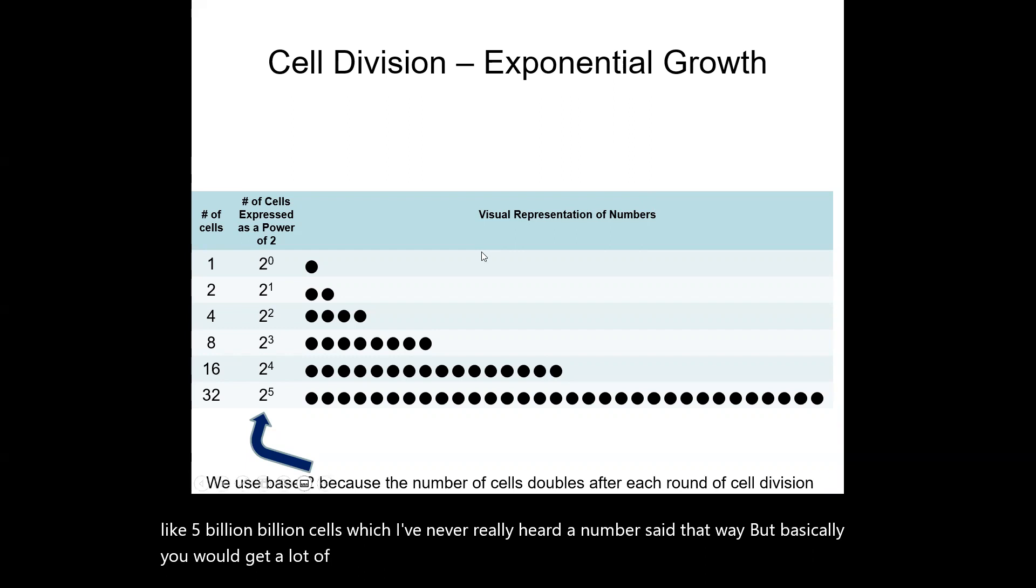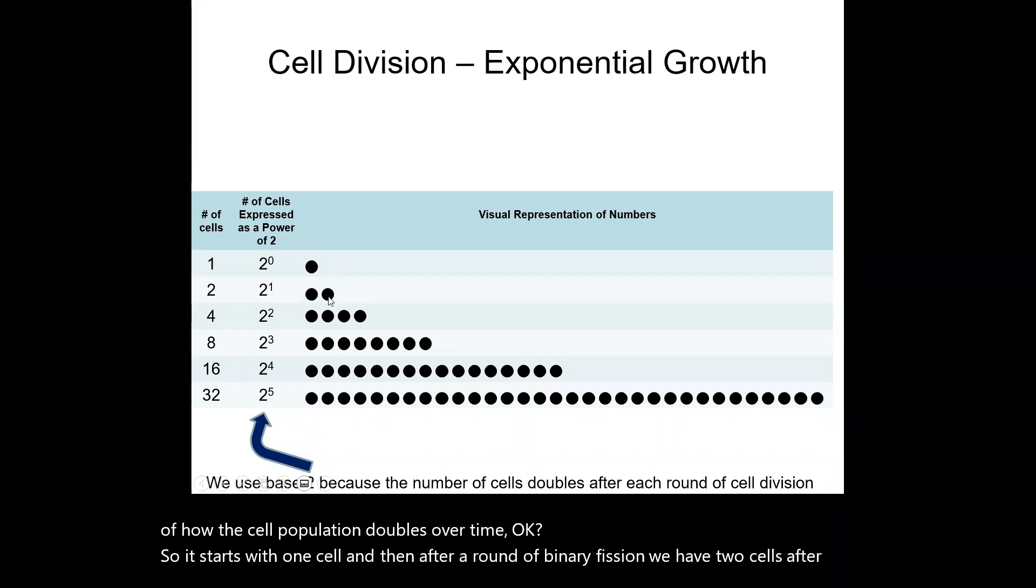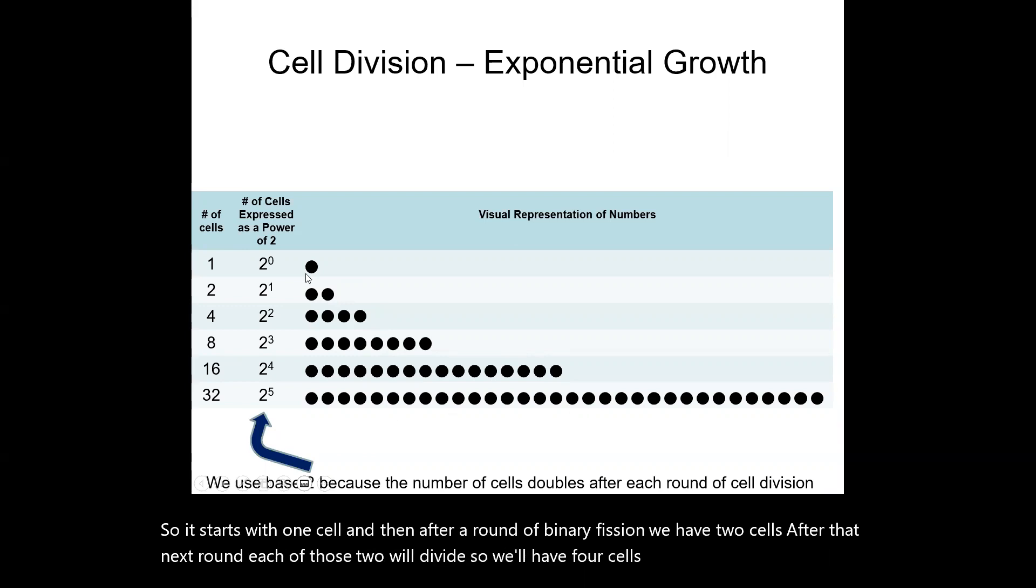And so this is just a visual representation of how the cell population doubles over time. So it starts with one cell, and then after a round of binary fission we have two cells. After that next round, each of those two will divide so we'll have four cells and so on and so forth. And so you can express this logarithmically here with a base number of two. We use a base of two because the cell doubles after each round.